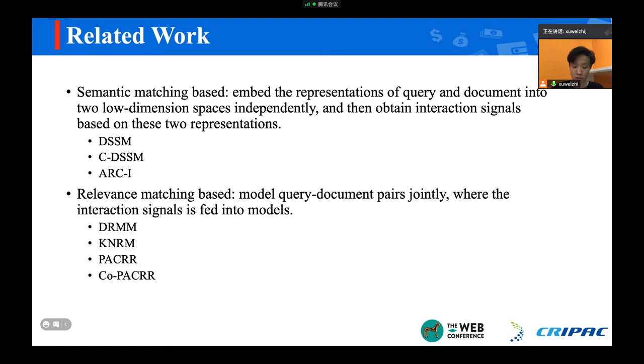They follow the same paradigm mentioned before and just have differences in the embedding function, such as MLP in DSSM and CNN in CDSSM and ARC-I. Recent work is always relevance matching-based since they discovered that modeling exact interaction signals are more important for ad-hoc retrieval. They first modeled query-document pairs jointly, where the interaction signal is fed into the model. The highlighted work includes DRMM, KNRM, PACRR, and Co-PACRR.